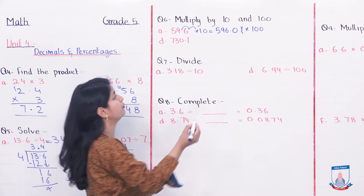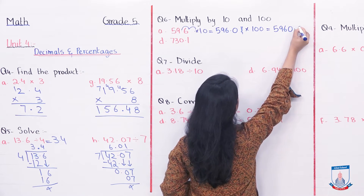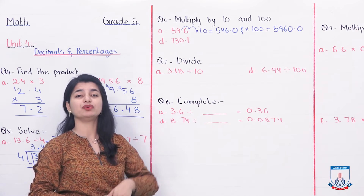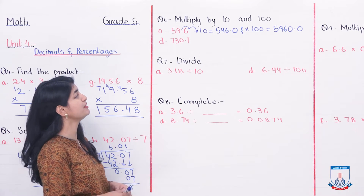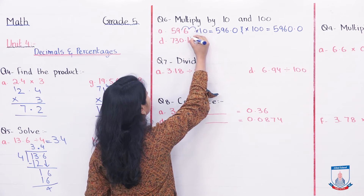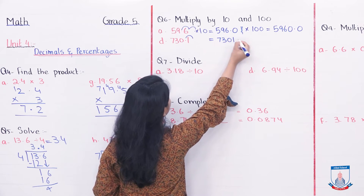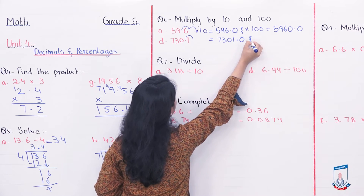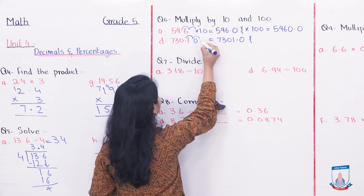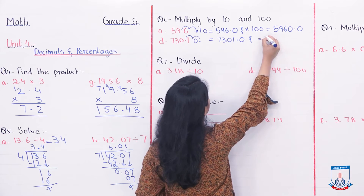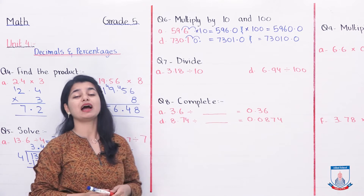So, what will we have then? We can put our answer as 5, 9, 6, 0 — so 5960. You have to multiply that number by 10 and 100. Another part of the question: when you multiply a decimal by 10, the decimal moves 1 time to the right. So we can write it as 730.1. And if we multiply the same thing by 100, the decimal will move 2 times to the right. You can put a 0 here and place the decimal, so your answer would become 7301.0. In this way, you can complete the rest of the two parts.